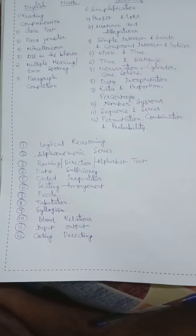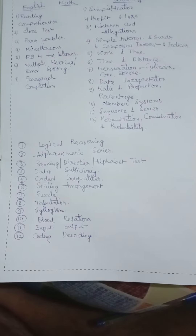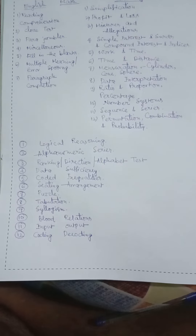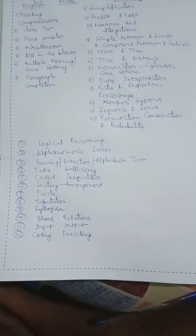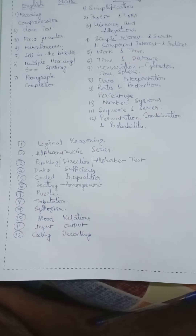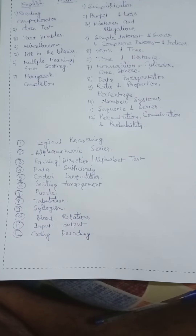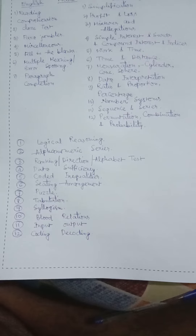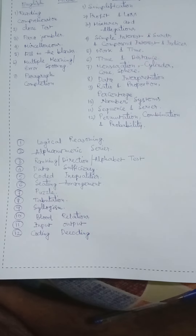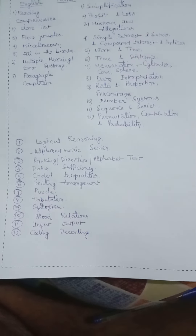Additional reasoning topics include sitting arrangement, puzzle, tabulation, syllogism, blood relations, input-output, coding-decoding, and resolution.